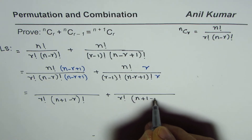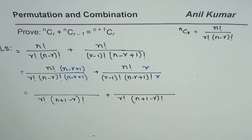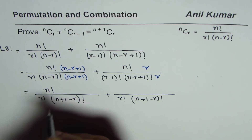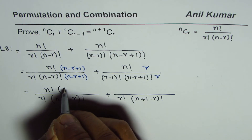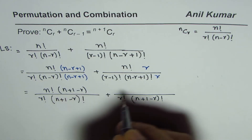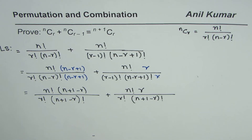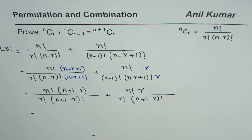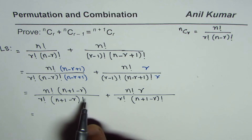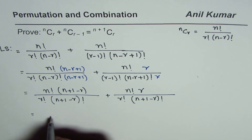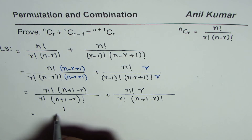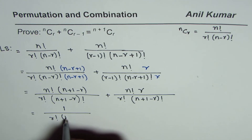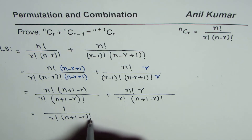r times r minus 1 factorial is the same as r factorial, and this can be rearranged and written as n plus 1 minus r factorial. The numerators are n factorial times n plus 1 minus r, and n factorial times r. Since the denominators are the same, we write 1 over r factorial times n plus 1 minus r factorial.